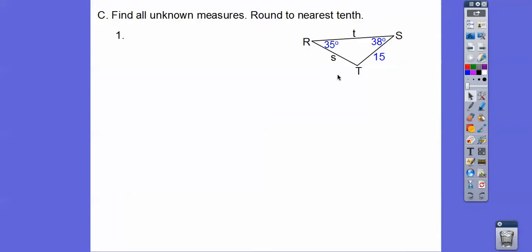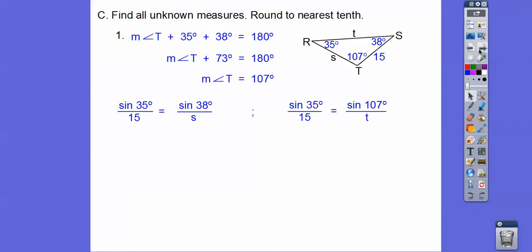So here I see 35 and the side opposite. So we'll say the sine of this over 15 equals the sine of this over this equals the sine of this over this. Well, let's get this first, a triangle. Triangles add up to 180, so we get 107 right there. So here's our two ratios we're going to use.